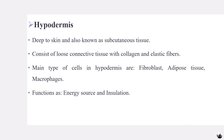Hypodermis is a deep layer of skin, also known as the subcutaneous layer. It consists of loose connective tissue with collagen and elastic fibers. The main types of cells present in hypodermis are adipose tissue, macrophages, and fibroblast cells. The main functions of hypodermis are insulation and acting as an energy source.